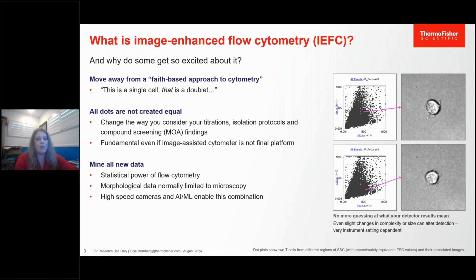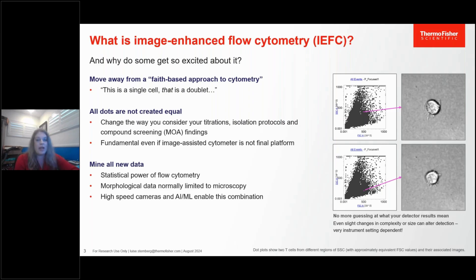But now, with the addition of a high-resolution imaging camera onto your flow cytometer, you can actually check up on those statements and go more into fact-based flow cytometry. This allows you to change the way in which you do your titrations, your isolation protocols, your compound screenings, and it allows you to get tighter margins and more significant data out of the same samples you've been running all along.